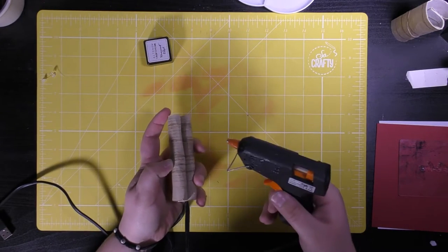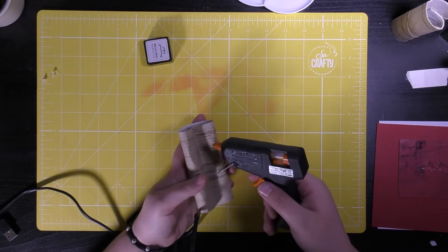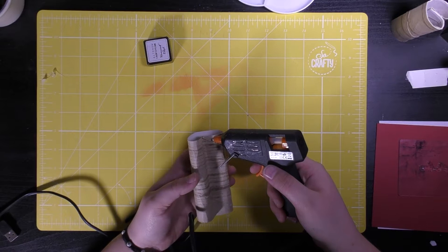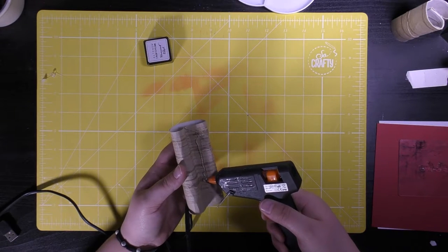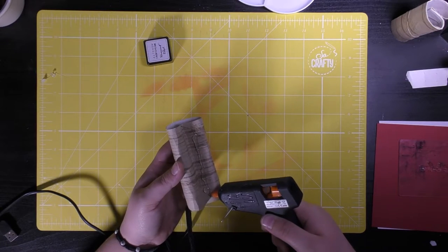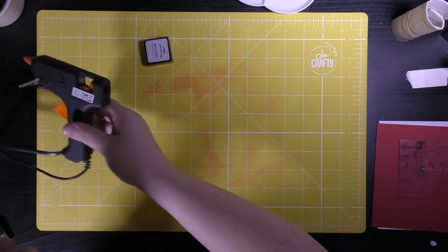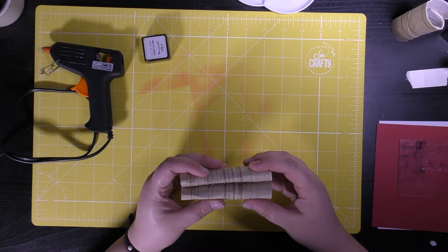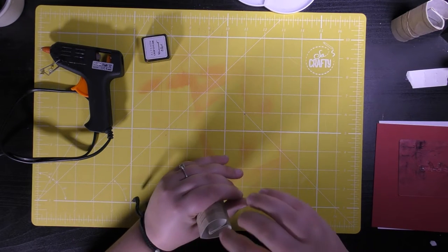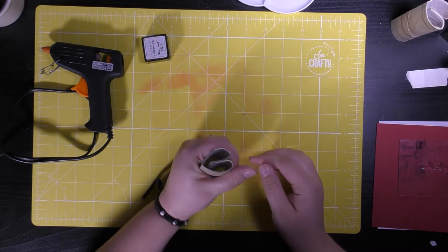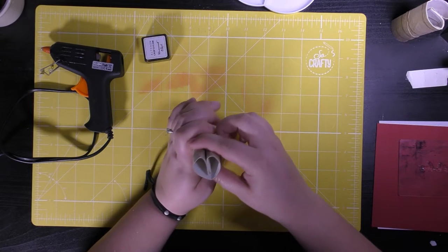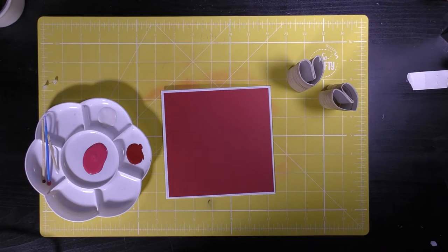Just place your adhesive on the inside of the fold and then all you have to do is just hold the heart shape together until your adhesive has dried. You can continue to manipulate your cardboard as the glue is drying.